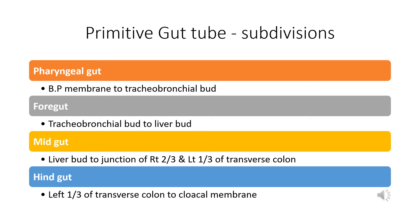In our further discussion we will not be considering the derivatives of the pharyngeal gut, because you have already studied the development of the head and neck region and the pharyngeal arches. In our discussion on the development of the gastrointestinal tract we will be focusing mainly on the derivatives of the foregut, midgut, and hindgut.